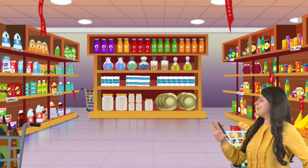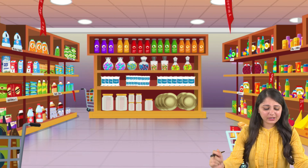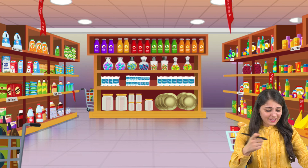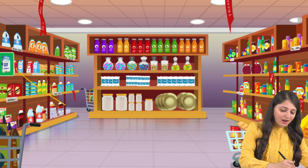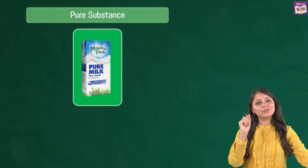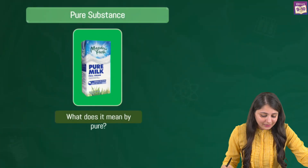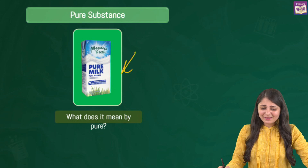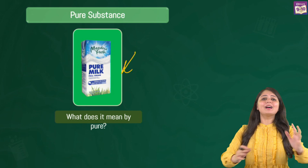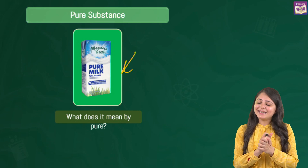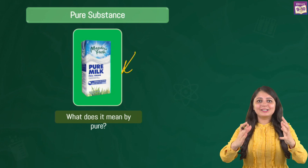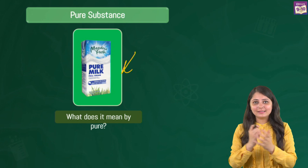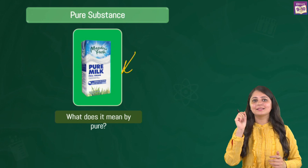I wish to buy milk, so let's go to a store. Here we have a store — can you figure out where the milk is? There you go, you can spot the milk. Let's zoom in a bit and see what's written on the bottle. It says 'Pure Milk.' What does it mean by pure? Is it really pure? If you ask the shopkeeper or any common person, they would say yes, absolutely the product is very pure.